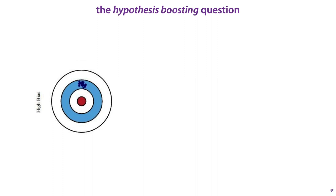This is the hypothesis boosting question, and here hypothesis is a synonym for learner or model. Is there an ensembling method that allows us to create a series of models from a family with high bias, like linear models or decision stumps,